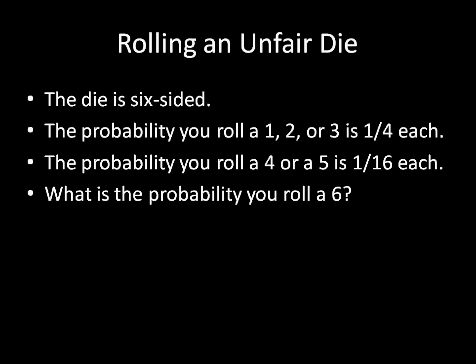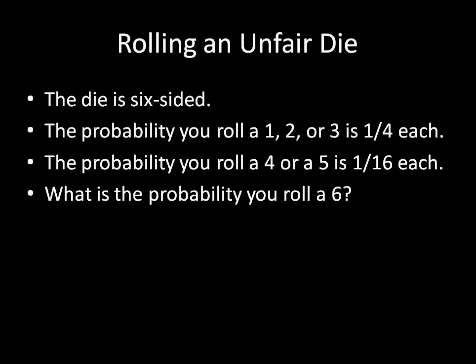So it's going to be 1 minus the probability of everything else added together. And there's a bit of that math on your screen right there, and I did all the work already. And if you add up one-fourth plus one-fourth plus one-fourth plus one-sixteenth plus one-sixteenth, you get seven-eighths. So 1 minus seven-eighths equals one-eighth, and that's the probability that you will roll a 6 using this unfair die.